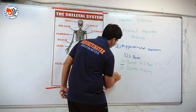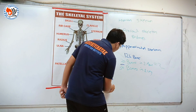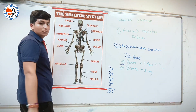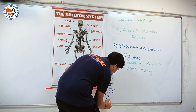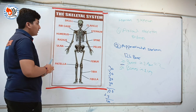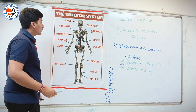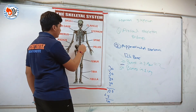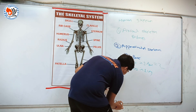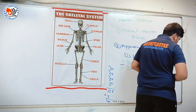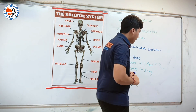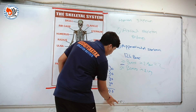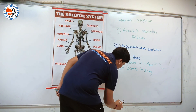30 bones per arm and 30 bones per leg gives us 120 bones. The clavicle comes under appendicular skeleton, making it 122. Pelvis also comes under appendicular skeleton — plus 2 equals 124. And there are 4 pectoral girdle bones, making it 126 total in the appendicular skeleton.